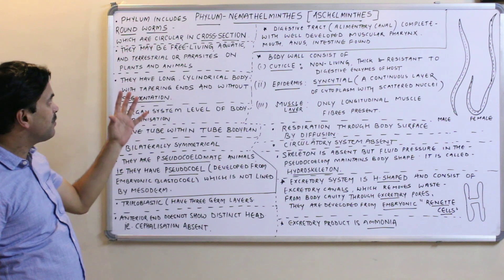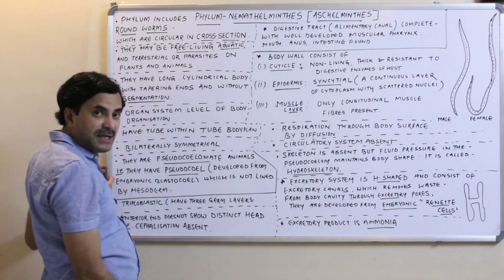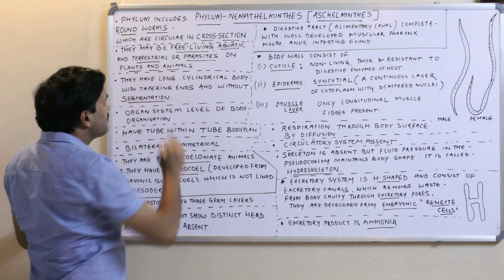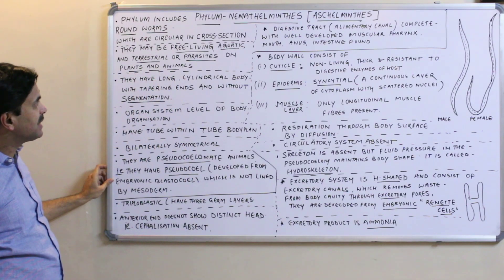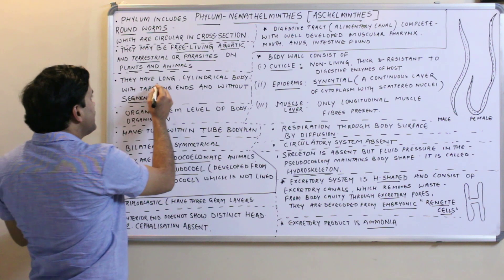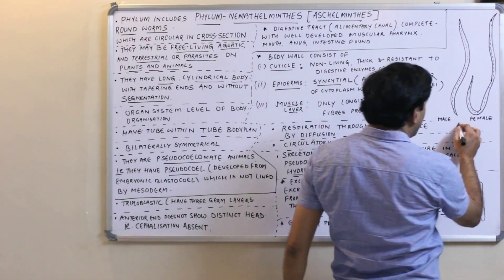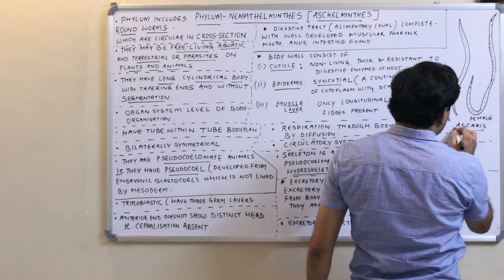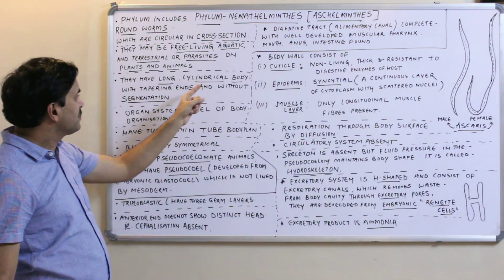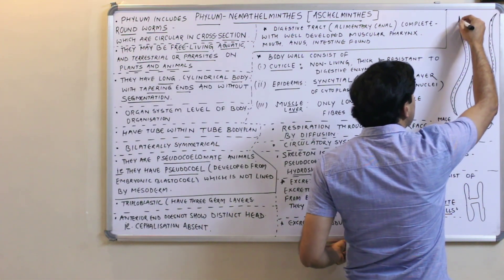Regarding their habitat, they may be free-living — aquatic and terrestrial — or parasitic on plants and animals. Their body is long and cylindrical, as shown in the diagram of Ascaris — both male and female — with tapering, pointed ends.